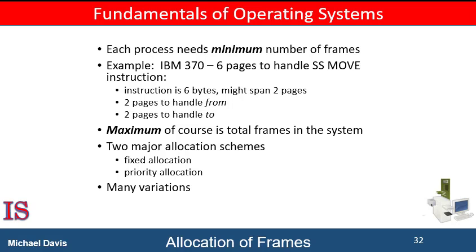There are many variations on this simple strategy. We can require that the operating system allocate its full buffer and table space from the free frame list. When this space is not used by the operating system, it can be used to support user paging. Or, we can try to keep some number of free frames reserved on the free frame list at all times, so that when a page fault occurs, there is a free frame available to page into. While the page swap is taking place, a replacement can be selected and written to the storage device as the user process continues to execute.